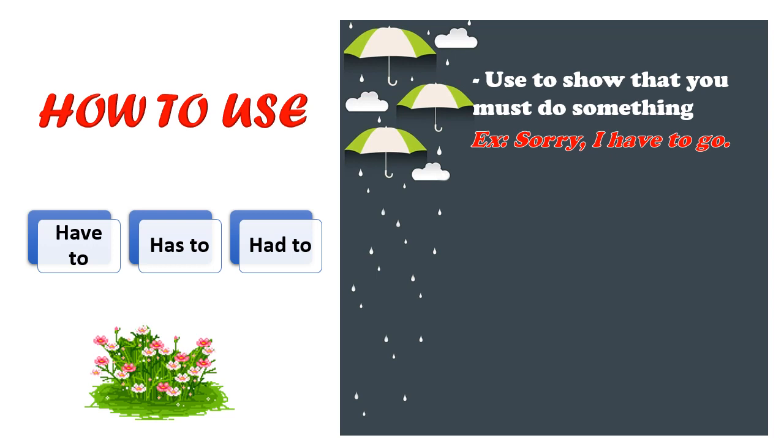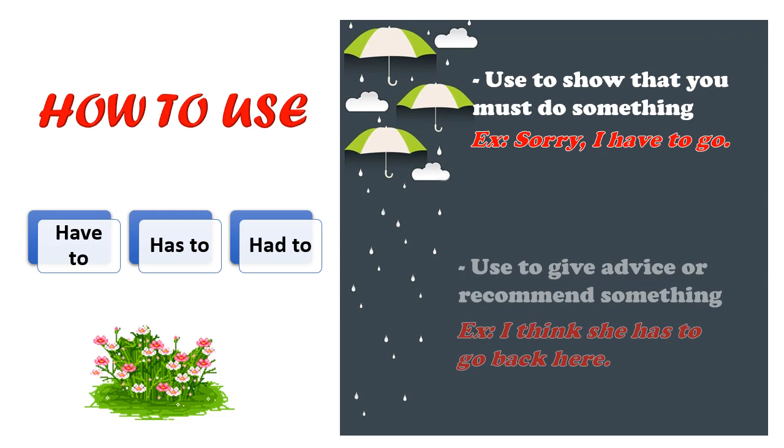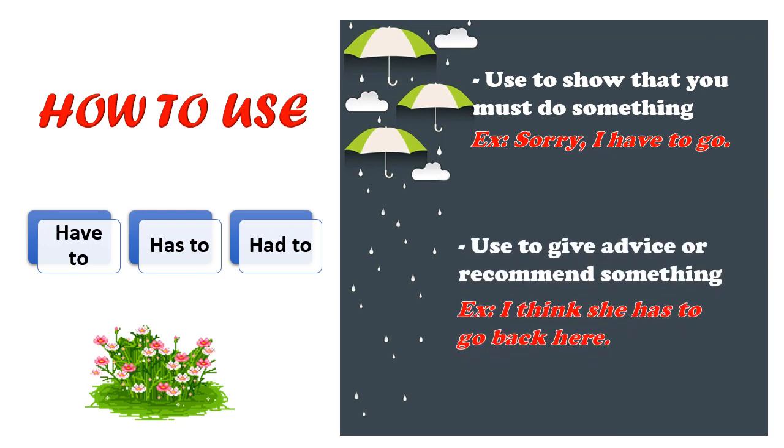Sorry, I have to go. Xin lỗi, tôi phải đi rồi. Or we use it to give advice or recommend something. Chúng ta sử dụng những động từ này còn để cho lời khuyên và đề nghị một việc gì đó. Example: I think she had to go back here. Tôi nghĩ rằng cô ta phải quay lại đây.